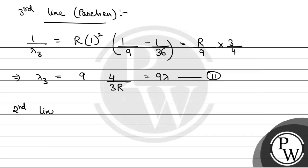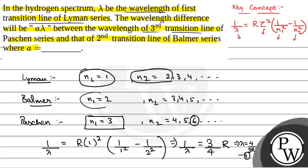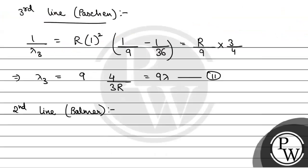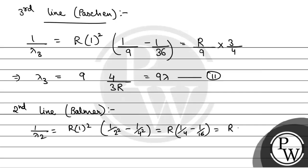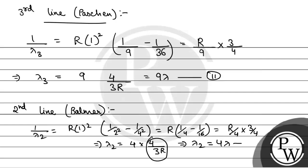For the second transition line of the Balmer series, N1 = 2 and N2 = 4. So 1/λ₂ = R · (1/2² − 1/4²) = R · (1/4 − 1/16) = 3R/16. Therefore λ₂ = 16/(3R) = 4 · (4/(3R)) = 4λ. This is equation 3.